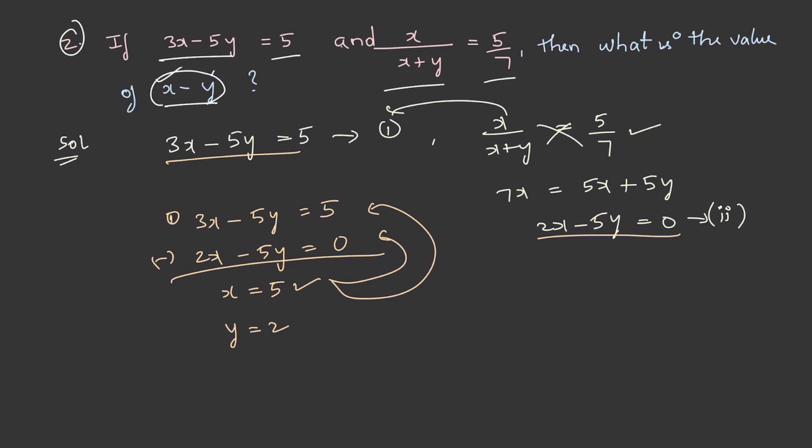If we know the values of x and y, it is pretty simple. So, x - y = 5 - 2. Therefore, the value of x - y is 3. This is the answer: x - y = 3.